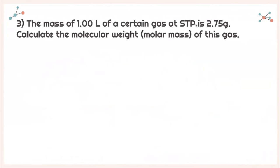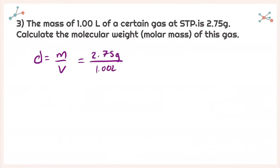For question 3, it asks: the mass of 1.00 liters of a certain gas at standard temperature and pressure is 2.75 grams. Calculate the molecular weight and molar mass of this gas. We're given mass and volume, so we can find density. Density is mass over volume: 2.75 grams divided by 1.00 liters gives us a density of 2.75 grams per liter.